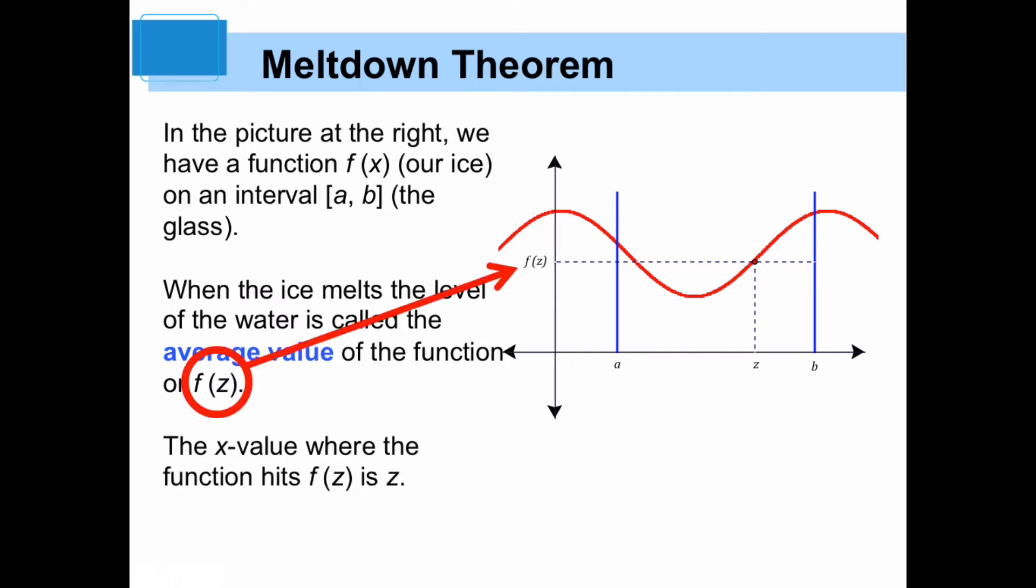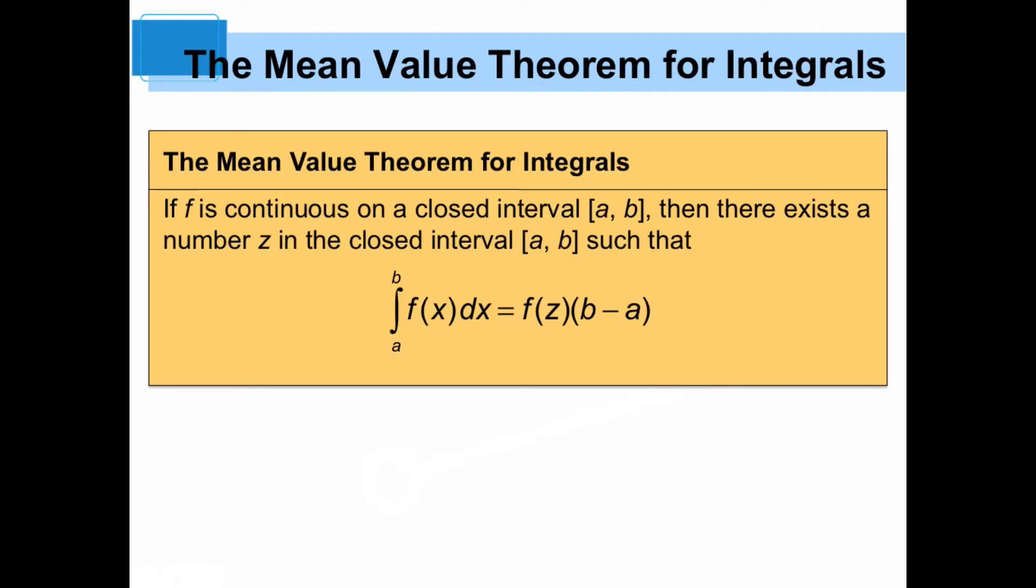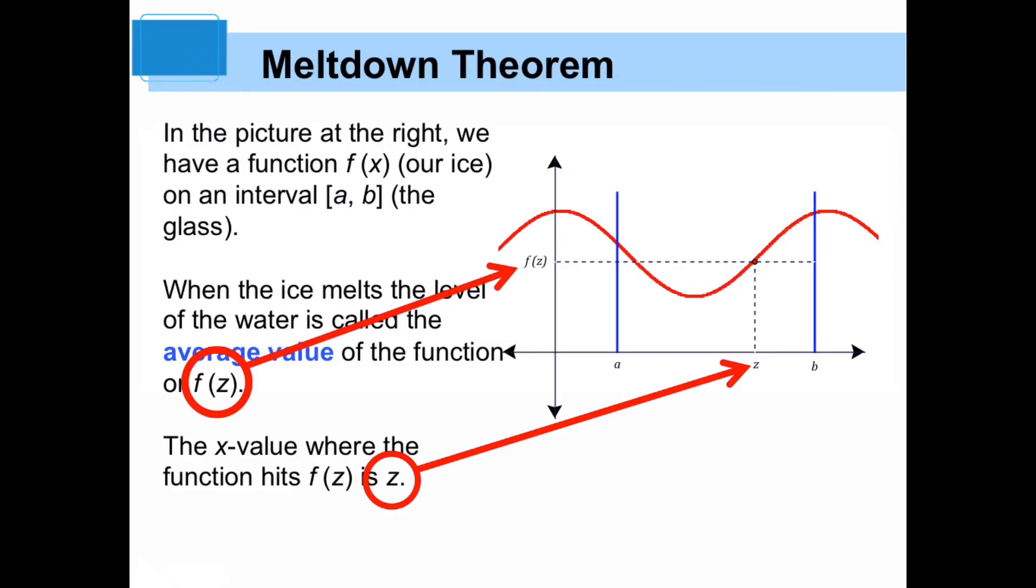Okay, so there's f of z. That's the average value. And then like I said, z is the x value that gives us that y value. So normally what we do is we go from the x value, plug it into the function, find the y value. What we're going to be doing today is actually going backwards, going from the y value and finding the x values. So how do we find that? Well, you've got a nice simple equation here. That definite integral is equal to the average value times the quantity b minus a. Okay, so let's back up a second. I know you're writing, but be patient with me. Think about this geometrically.